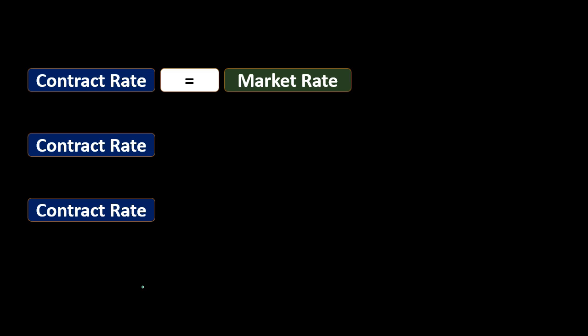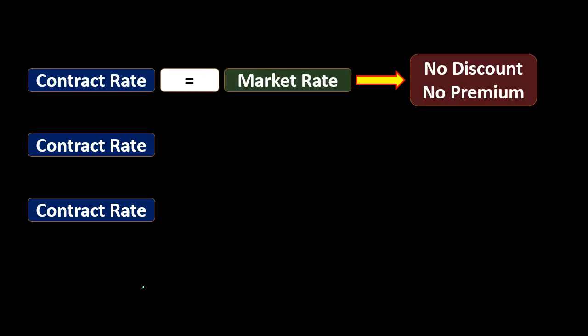If the contract rate is equal to the market rate, then we can just issue the bond with no discount and no premium, making it very similar to a normal loan transaction, because the rate stated on the bond is essentially correct — exactly what the market rate is. This would only happen if we issued the bond right at the same time we made it.